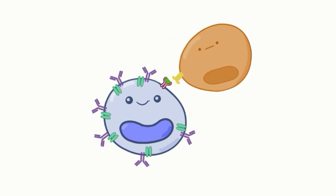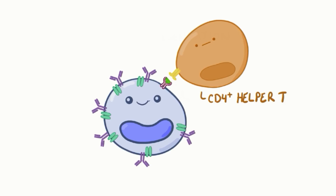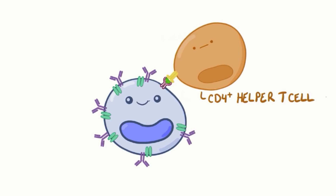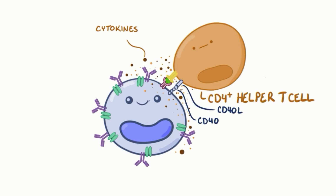Then, at some point, along comes a CD4-positive helper T cell that binds to the presented antigen, and when that happens it expresses a protein called CD40 ligand on its surface. The CD40 ligand attaches to a receptor on the B cell's surface called CD40. This engagement is the key to activating B cells. Often, the T cell also secretes cytokines like interferon gamma and different interleukins, which direct the B cell with specific instructions as to what class of antibody it should start producing.